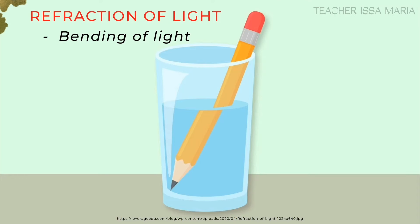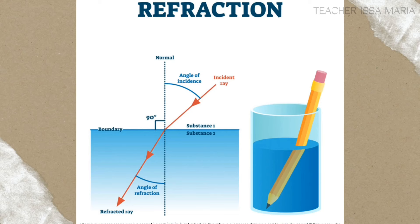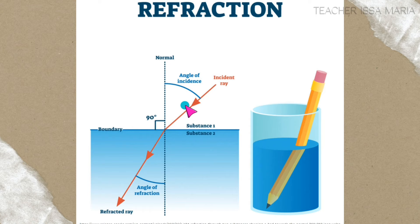Refraction of light is the bending of light. Looking at the picture, the pencil doesn't actually appear broken, but it looks that way because of the bending of light. The incident ray hits a lens and bends — it is not going straight. The incident ray can also reflect off the surface, and when it reflects, the angle of incidence equals the angle of reflection. If the angle of incidence is 30 degrees, the reflected ray is also 30 degrees.